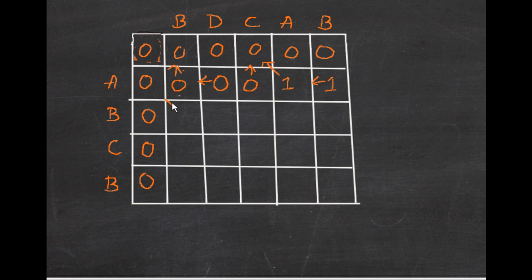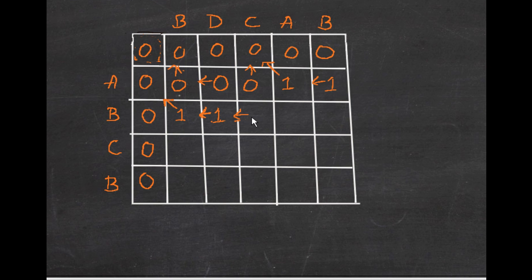Moving on: B and B match, so we increment this number by 1, giving us 1. B and D do not match — take the maximum from the left, so 1. B and C do not match — take the maximum, so 1. B and A do not match — take the maximum, so 1. B and B match! So we increment the number at this cell by 1, and we get 1 plus 1 equals 2.